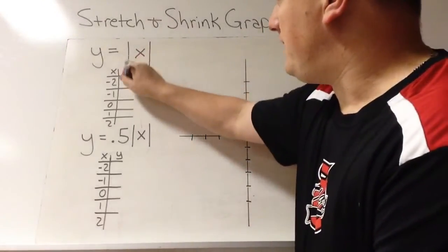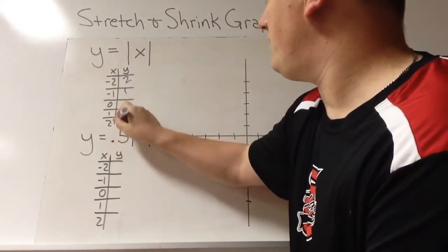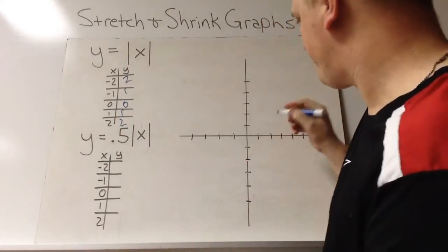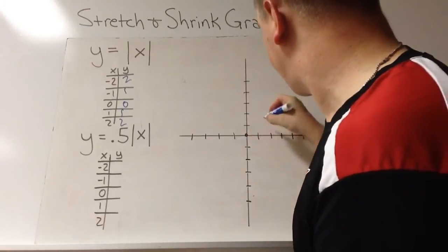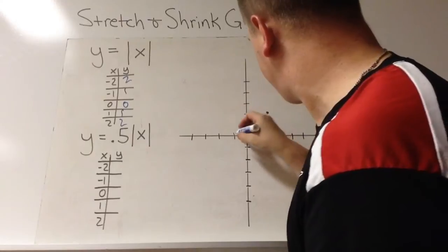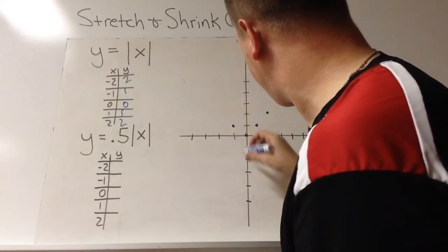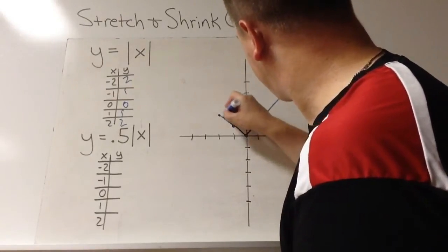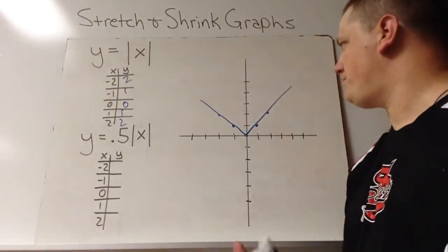So this is going to be 2, 1, 0, 1, 2. Absolute value of all those. So there's our absolute value.